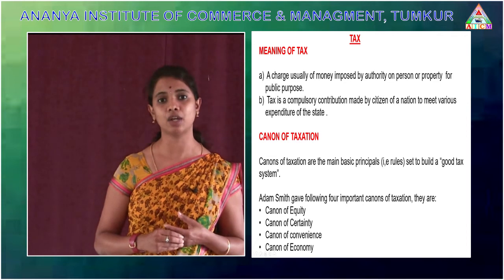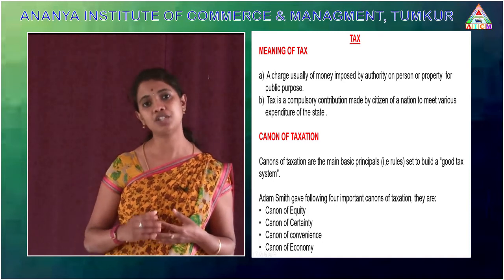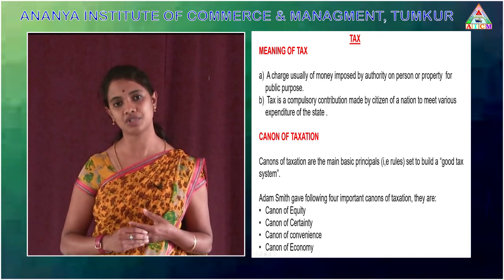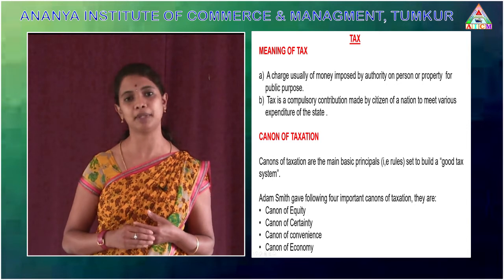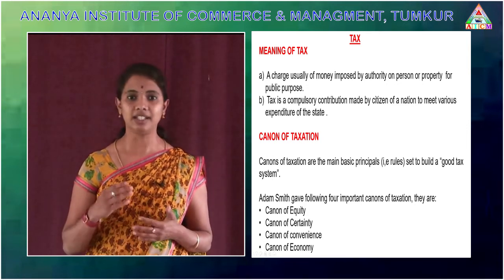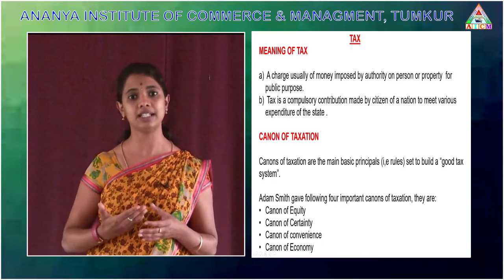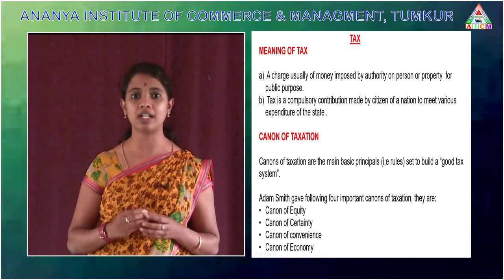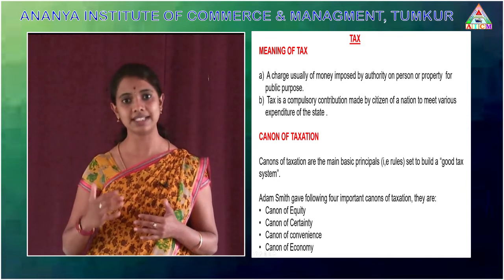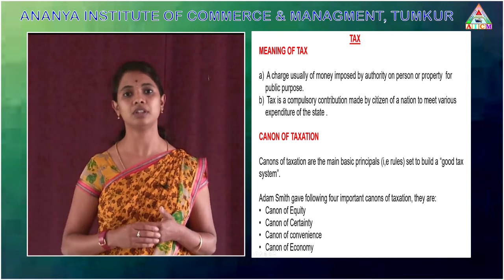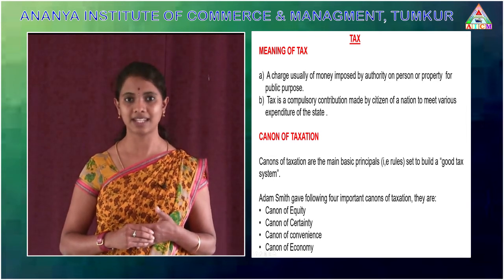The next canon is the canon of economy. This canon states that there should be economy in tax administration. It means the cost of collecting tax should be minimum relative to the tax collected. If the tax collection cost is more, it is called uneconomical. The tax collection method and system should be economical. These are all the four important canons given by Adam Smith. Thanks for watching.